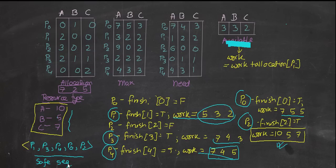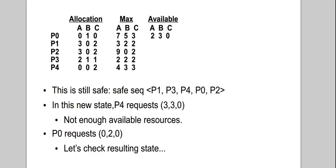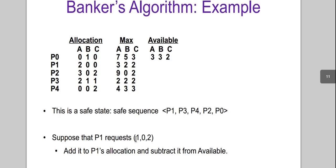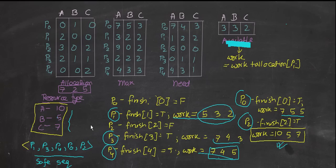Now, when a process wants to request a resource — suppose P1 requests 1,0,2 — we add this request to P1's allocation: 2,0,0 plus 1,0,2. We also subtract this request from available: 3,3,2 minus 1,0,2. After updating the allocation and available, we recompute the whole algorithm — the work equals work plus allocation check — to see if a safe sequence still exists.